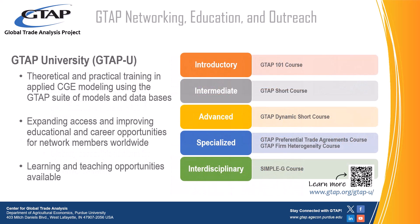Learning is a core value of the Center for Global Trade Analysis because it creates critical vibrancy both within the Center and in the GTAP network. The educational arm of the Global Trade Analysis Project is called GTAP-U and provides a comprehensive range of courses tailored to meet diverse learning needs while striving to expand access and improve educational and career opportunities for network members worldwide. GTAP-U courses help develop critical skills for independent economic research, and network members can also submit proposals to develop and teach their own GTAP-U course.